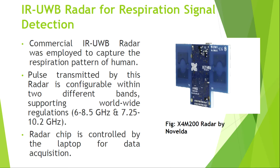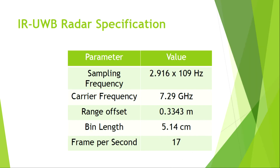This is the IR ultrawide band radar we used, purchased from Novelda. The frequency band is from 6 to 8.5 GHz and 7.25 to 10.2 GHz. We are controlling this radar through a laptop connected to it. The key parameters include sampling frequency, carrier frequency, range offset, range bin, and frames per second.